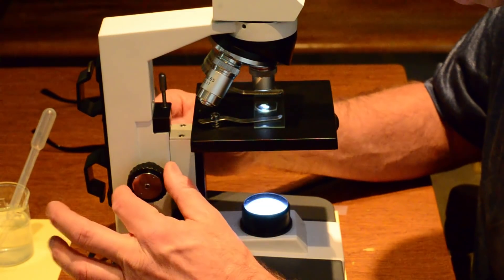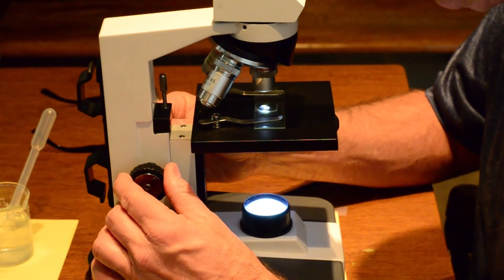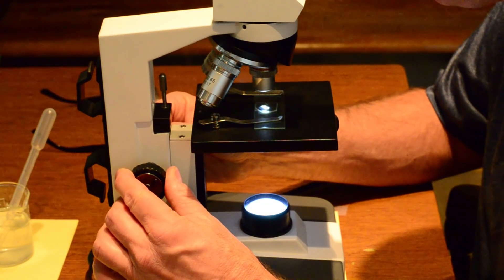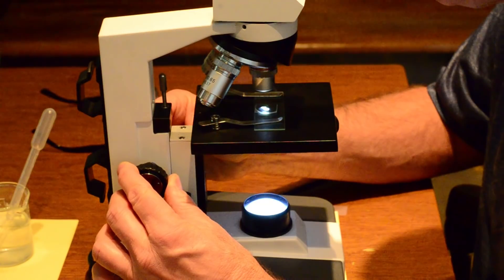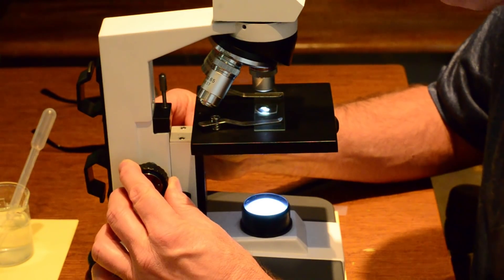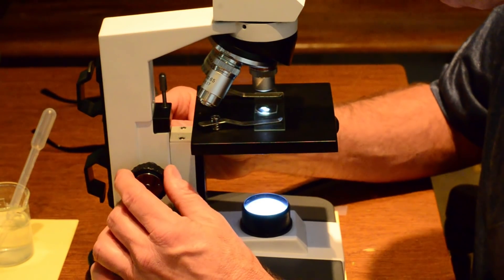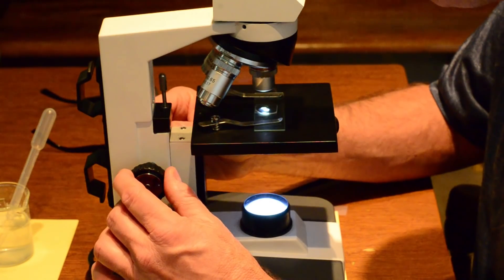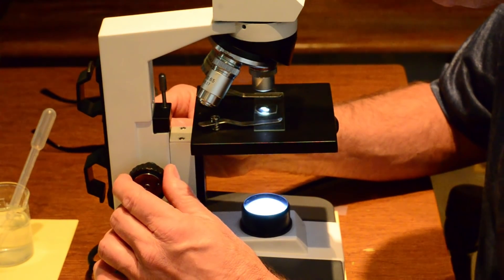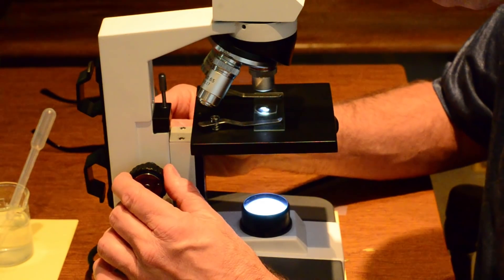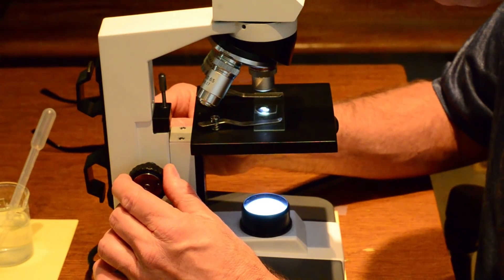And I'll grab my coarse adjustment knob and move it down until it comes into focus. I'm going to go real slow and voila. Beautiful. Now I'm looking at a very interesting arrangement of cells. I see the outer portion of the stem and some little hair like things that are coming off it. You're going to really enjoy looking at these.